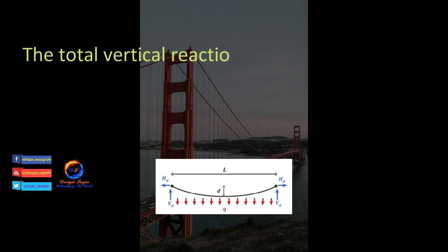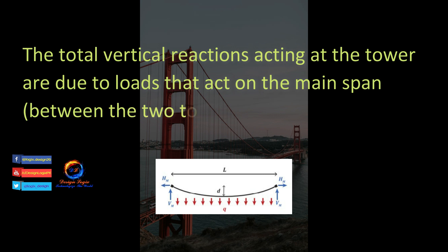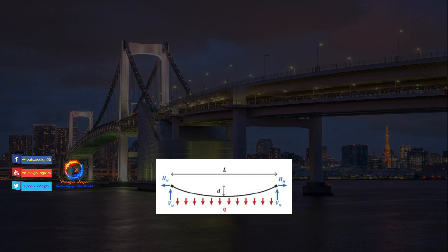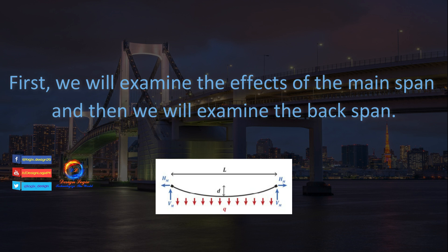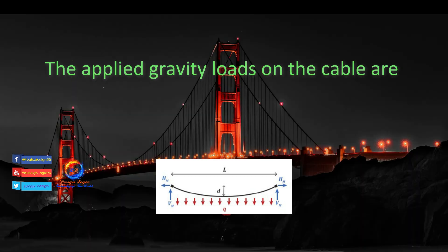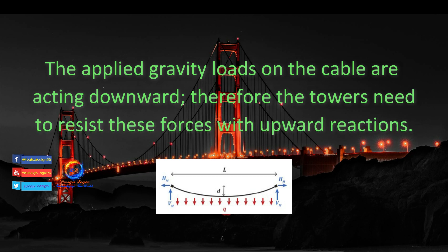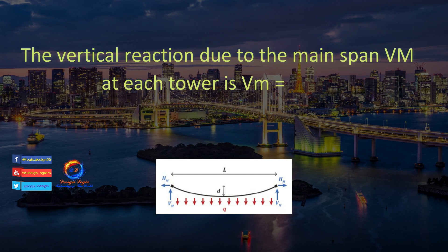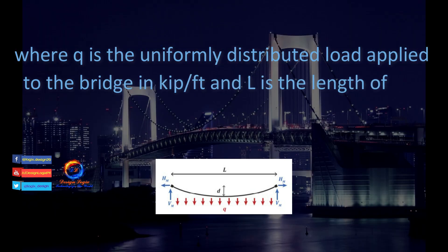This analysis will focus on the reactions at the tops of the towers and the anchors. The total vertical reactions acting at the tower are due to loads on the main span between the two towers and on the back span between the tower and anchor. First we will examine the effects of the main span, then the back span. The applied gravity loads on the cable act downward, therefore the towers need to resist these forces with upward reactions. The vertical reaction due to the main span, Vm, at each tower is: Vm = q·L / 2, where q is the uniformly distributed load in kip per foot and L is the length of the main span.